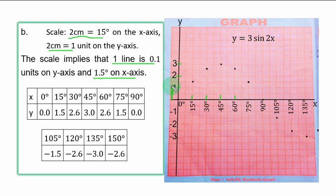Next thing is to plot the coordinates. When x is 0, y is 0, you plot that at the origin. This is the origin. When x is 15°, y is 1.5. After 1, you count 5 lines up and you have 1.5 somewhere here against 15°. When x is 30°, y is 2.6. After 2, you count 6 lines up. You have it here. When x is 45°, y is 3.0, that one is very easy to trace.